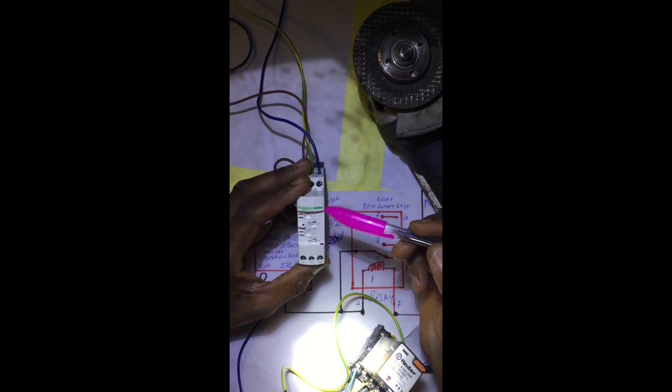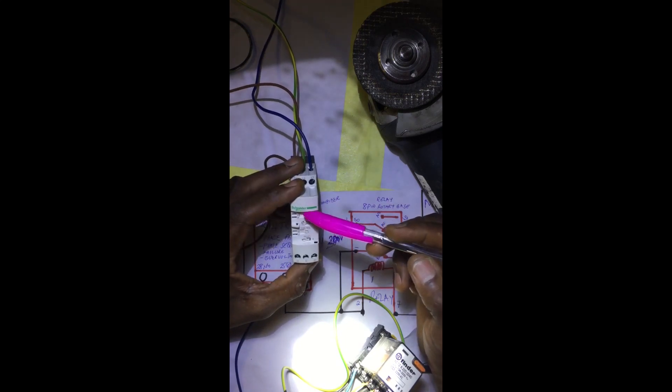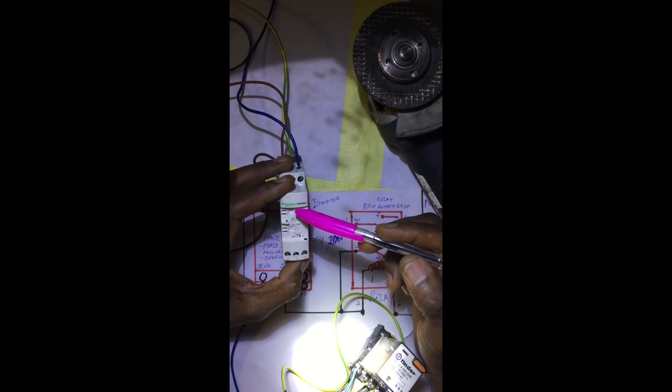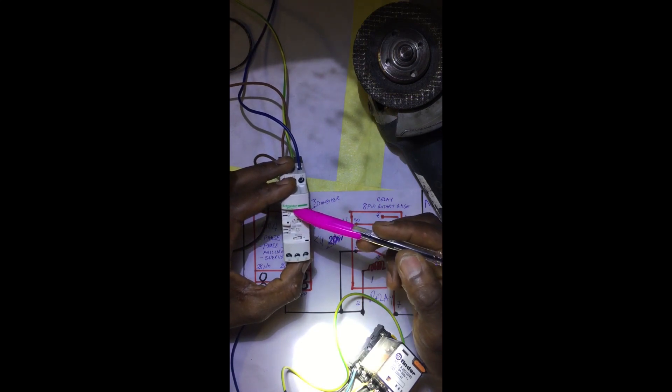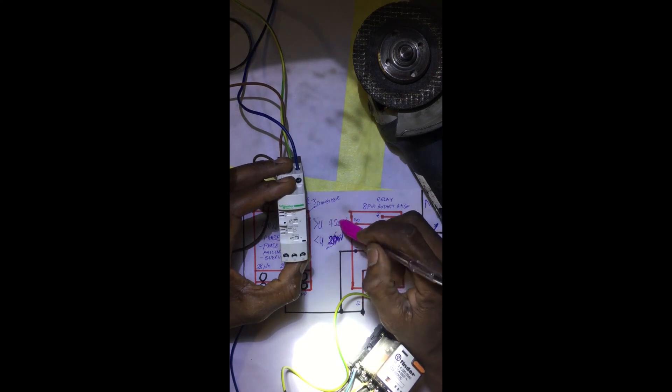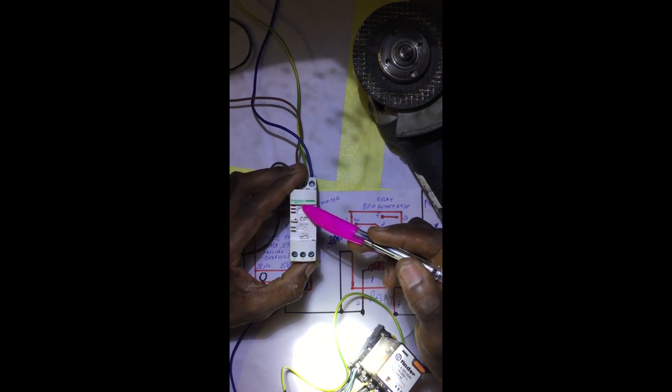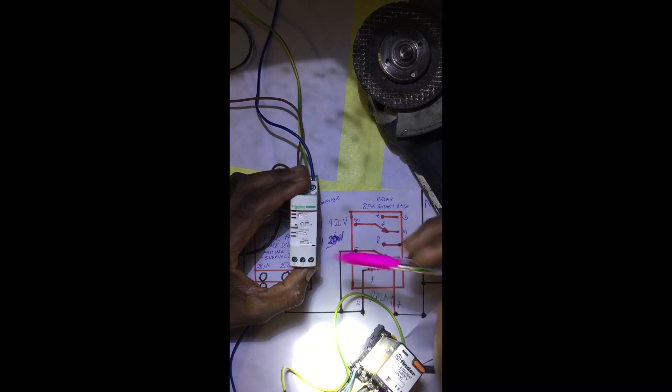That means you can say this relay should only conduct when the summation, the vector sum of the supply voltage, is between 360 and 420 volts. The upper threshold, which is greater-than, you set it here by turning this clockwise.